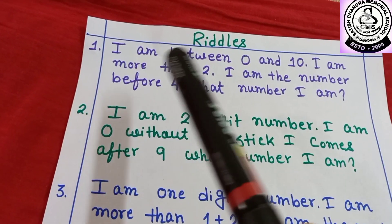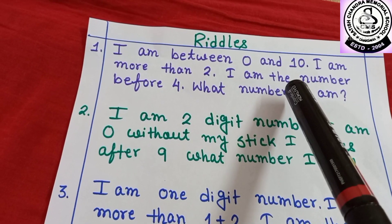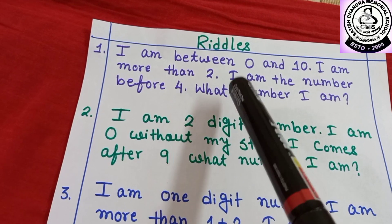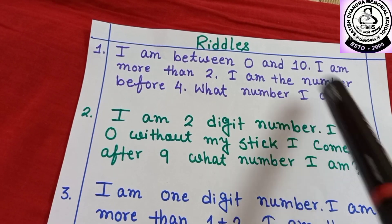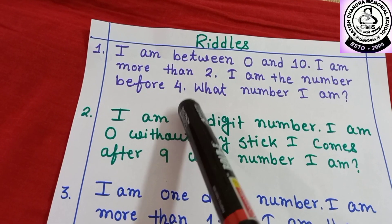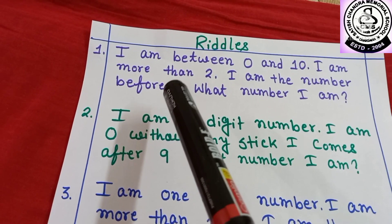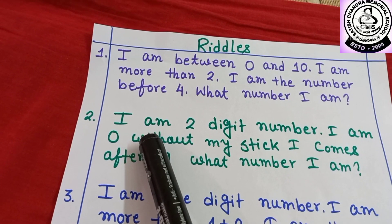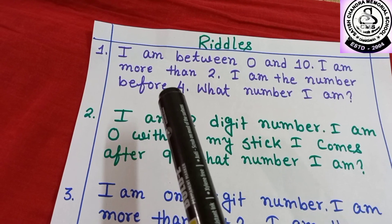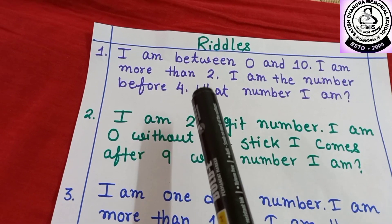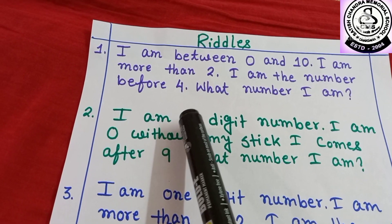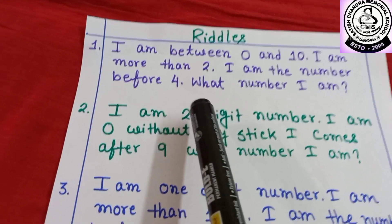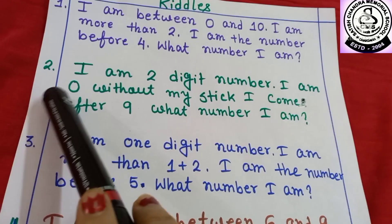I am between 0 and 10. I am more than 2. I am the number before 4. What comes before 4? Can you tell me? Yes! You are right! 3. So, what number am I? 3.